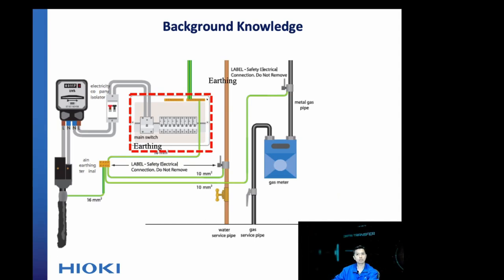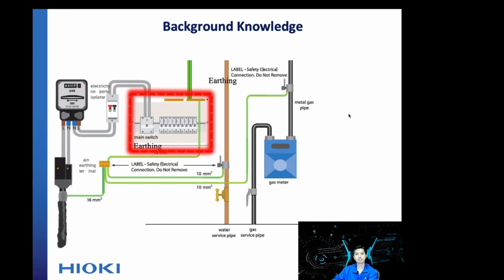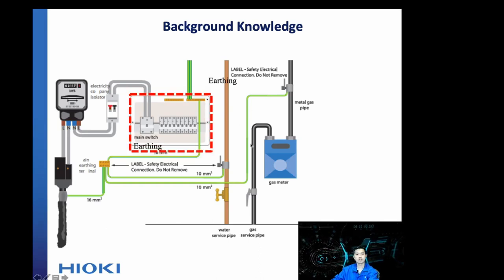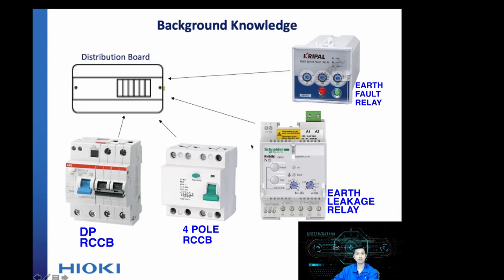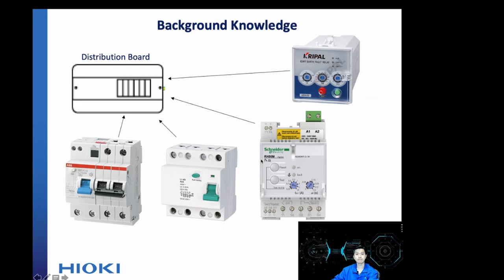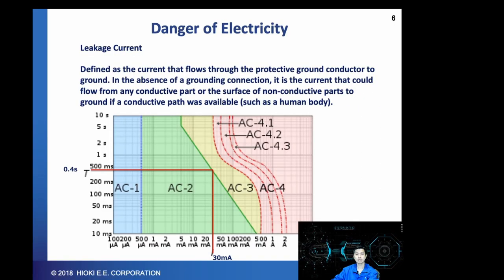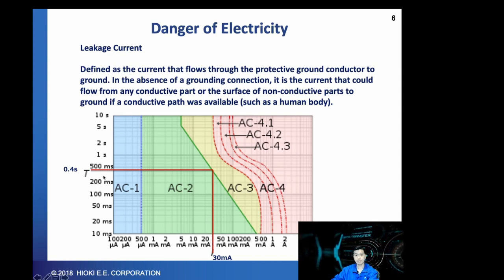In most distribution boards, you will find a residual current device to protect against leakage current. These are some of the examples of RCDs available in the market with specified leakage current ratings. You can also see the dangers of electric shock depending on the amount of leakage current and the duration of time.